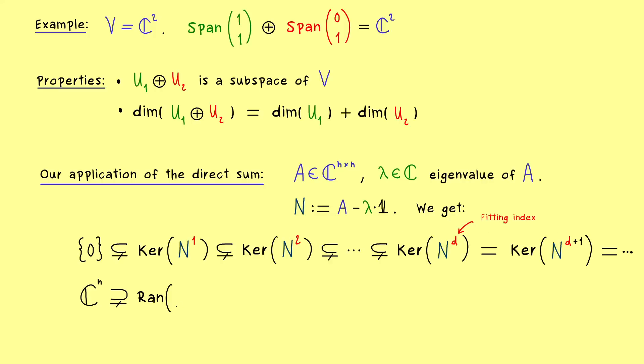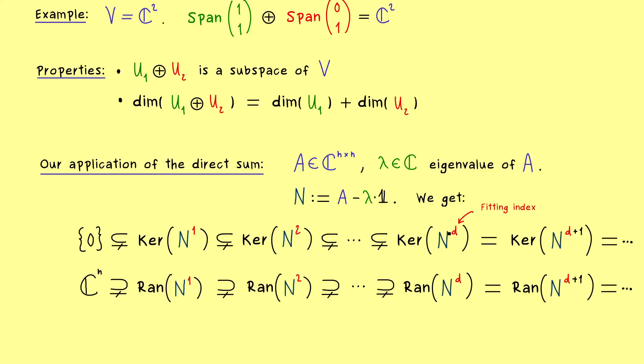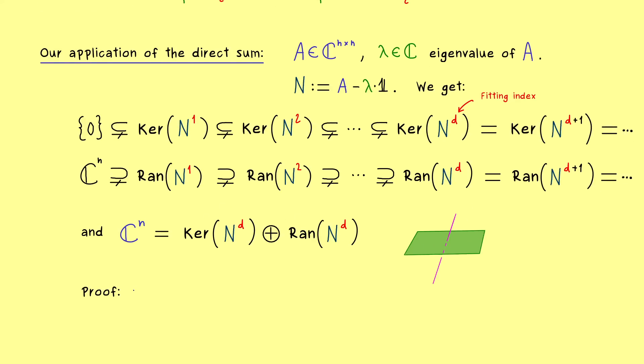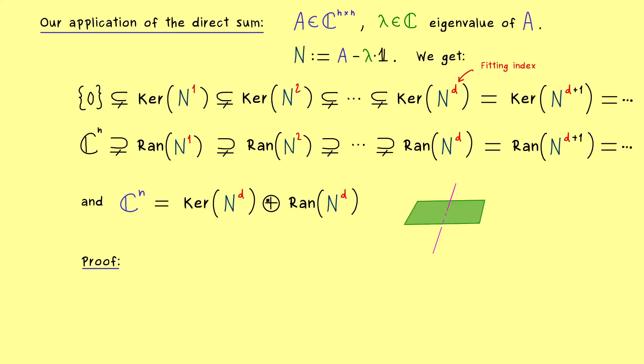Moreover, in addition to the chain with the kernels, we also have a chain for the range. This one we also have discussed a lot, and we have shown that we have the same fitting index there. This means, after the range of n to the power d, we have the equality as well. And now it turns out, that at this level of the fitting index, we can form the direct sum of the kernel and the range. And indeed, this direct sum is actually equal to the whole vector space cn. Therefore, we can just write cn is equal to this direct sum. And please note, this direct sum is only correct for the fitting index. And please recall, this means that both subspaces here span completely different directions. And obviously, this is what we want to prove now.